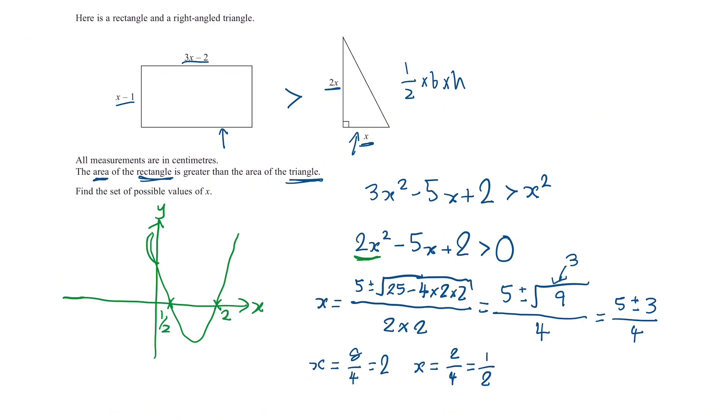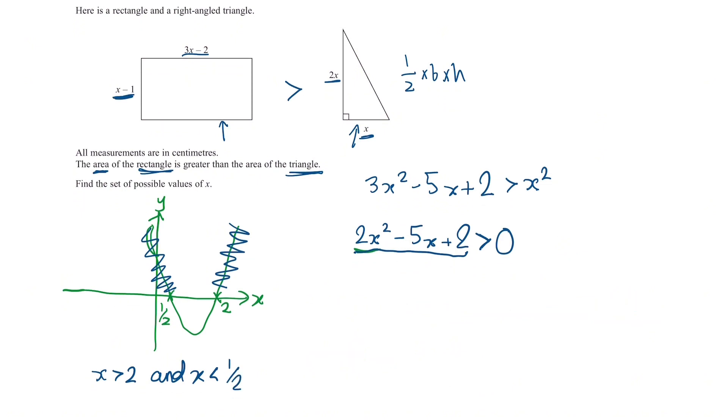Now we are asked to find when this quadratic is greater than zero. So what greater than zero means is y is greater than zero, so it's these portions of the graph. As you can see that is when it's above the axis. So it's going to be when x is greater than 2 and when x is less than a half.